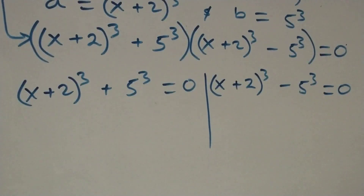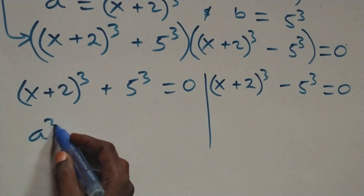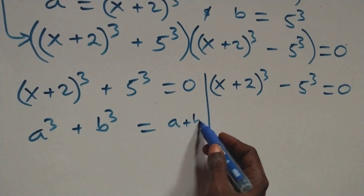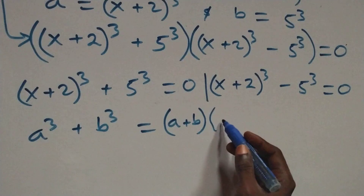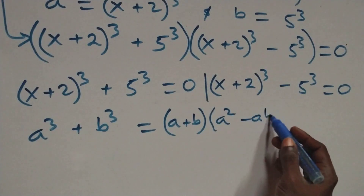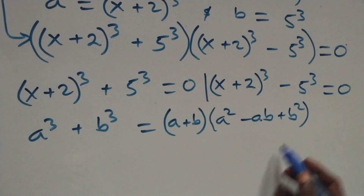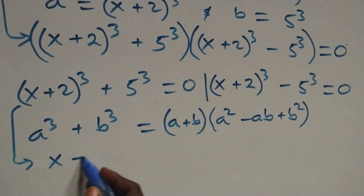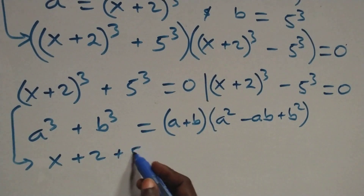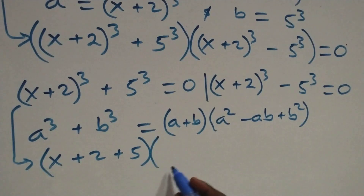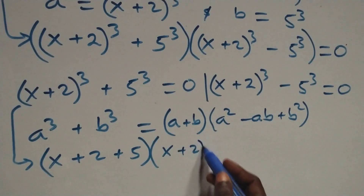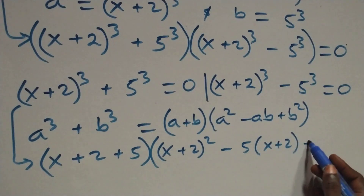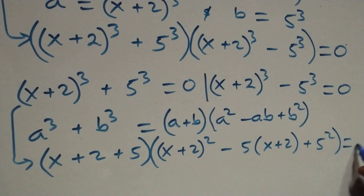Solving Case 1, this follows from a³ + b³ = (a + b)(a² − ab + b²). What we have here becomes (x + 2 + 5) times [(x + 2)² − 5(x + 2) + 5²] equals to 0.